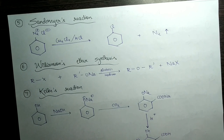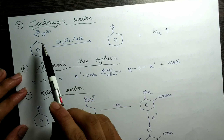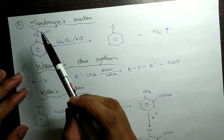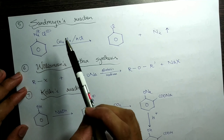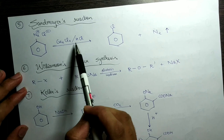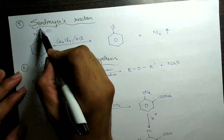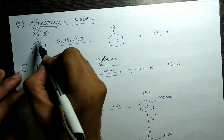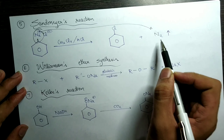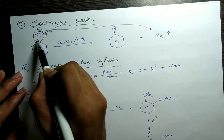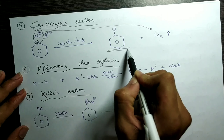The next reaction is the Fittig reaction. It is very similar to the Wurtz reaction, but instead of a haloalkane we have a haloarene. In this case we have benzene with a halogen, and the same reaction happens. Instead of two moles of haloalkane we take two moles of haloarene and make it react with sodium in the presence of dry ether. We get diphenyl or biphenyl — both are the same, you can write either one.